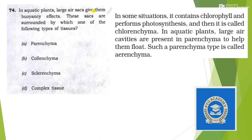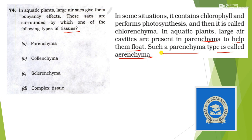Next: in aquatic plants, large air sacs give them buoyancy effects. These sacs are surrounded by which type of tissue? The tissue name is aerenchyma. In aquatic plants, large air cavities are present in parenchyma to help them float — such parenchyma type is called aerenchyma. Although aerenchyma is not given in the options, aerenchyma is a type of parenchyma, so the answer is option A — parenchyma. If aerenchyma were listed, it would be the most appropriate answer.